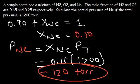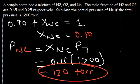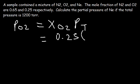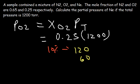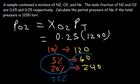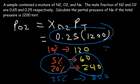If we also want to find the partial pressure of O2, we take the mole fraction of O2 and multiply it by the total pressure: 0.25 times 1200. To find 25% of 1200: 10% is 120, 5% is 60, and 20% is 240. So 25% is 20% plus 5%, which is 240 plus 60 equals 300. Therefore, 0.25 times 1200 is 300 torr.